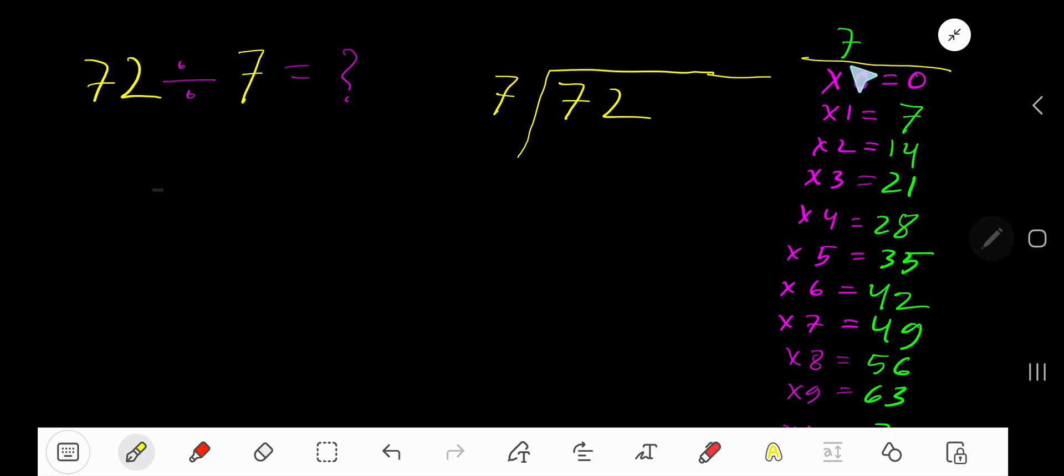To find out the multiplication table of 7 easily, just add 7 with the previous step. 0 plus 7 is 7, 7 plus 7 is 14, 14 plus 7 is 21, 21 plus 7 is 28, 28 plus 7 is 35. This process will continue.